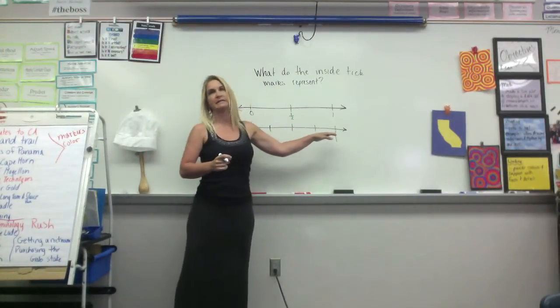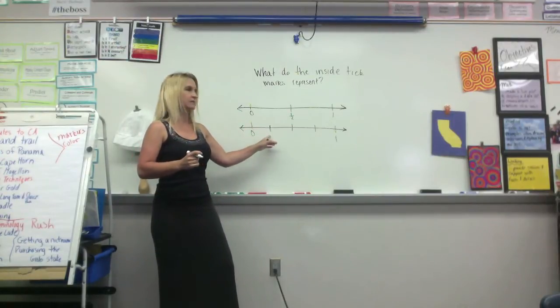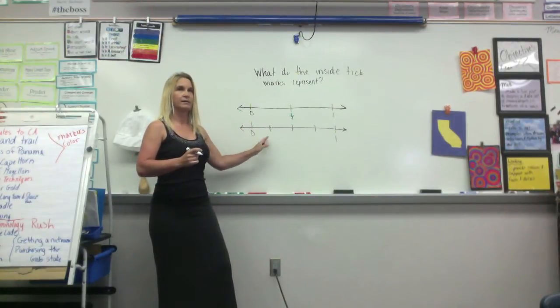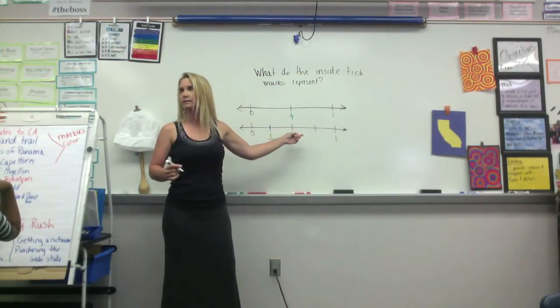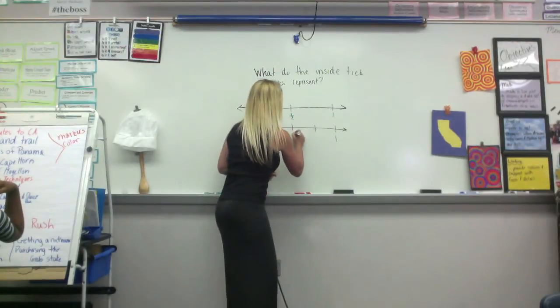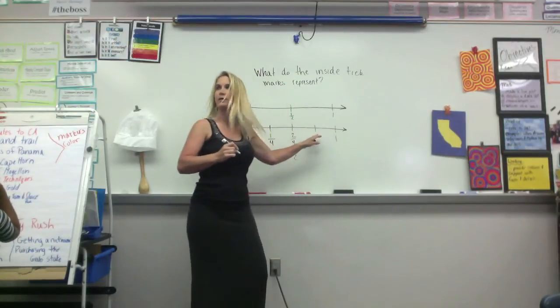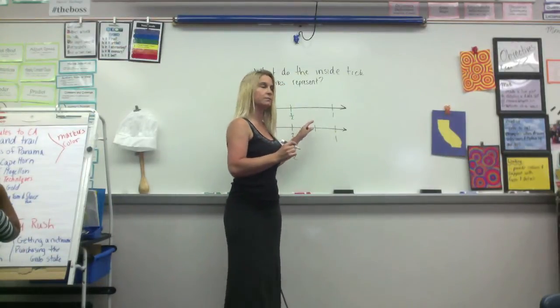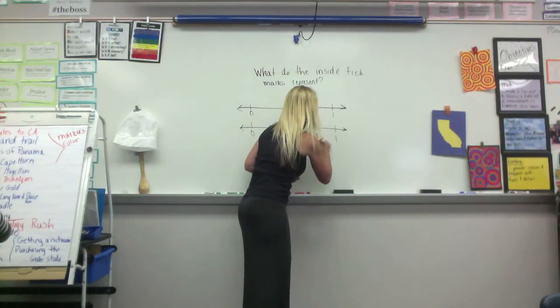All right, we have three tick marks on the inside here that are not labeled. What do you think this one represents, Sakaiya? It's not a third. What do you think, Kaylee? A quarter. A quarter. What would this one represent, Nicholas? Two over four or one half. Two over four or one half. This one, what would it represent, Andy? Three fourths. Three fourths. Okay.